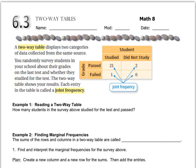Another new type of graph that we look at in this chapter is called a two-way table. A two-way table displays data from two different sources where you might take a survey and ask people two different questions.